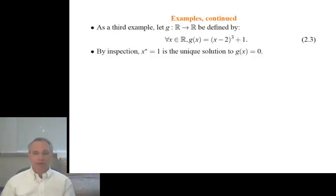As a third example, I've got a function there. It's just a very simple function. The dimension of x is 1 and the dimension of x is 1. I'll call that a simultaneous equation even though there's really only one equation. And by inspection, if you draw a graph of it, you'll see that the only solution is x star is equal to 1.